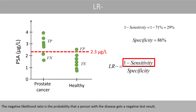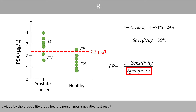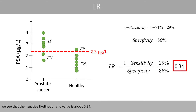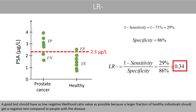The negative likelihood ratio is the probability that a person with the disease gets a negative test result, divided by the probability that a healthy person gets a negative test result. Plugging in the values for 1 minus the sensitivity and the specificity, the negative likelihood ratio is about 0.34. A good test should have as low a negative likelihood ratio value as possible, because a larger fraction of healthy individuals should get a negative test compared to people with the disease.